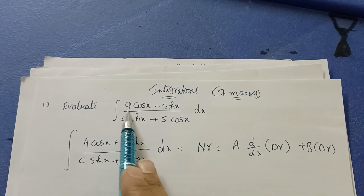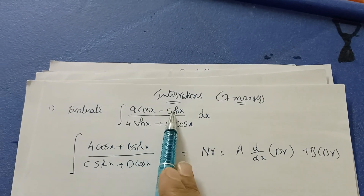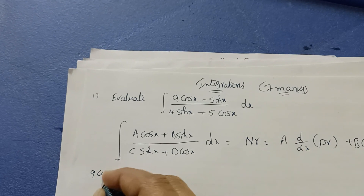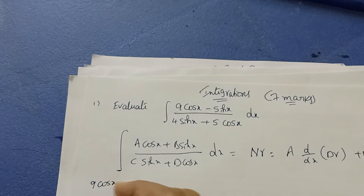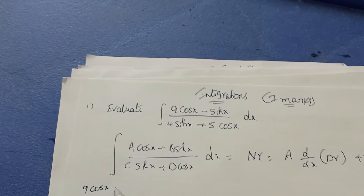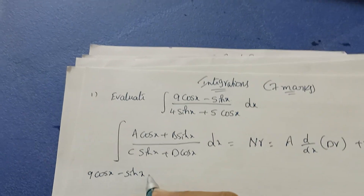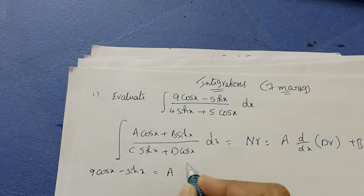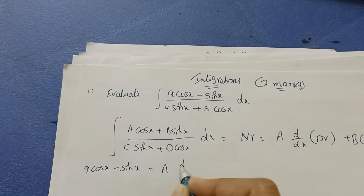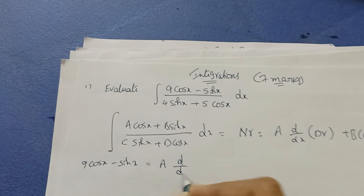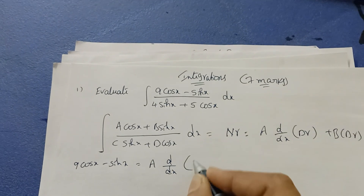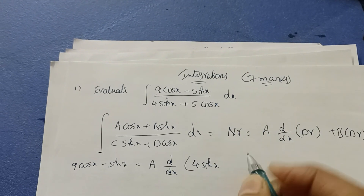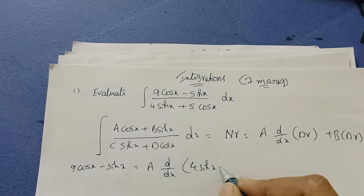Now, what is the numerator here? It is 9·cosx minus sinx. So write: 9·cosx minus sinx equals a times d/dx of the denominator, which is 4·sinx plus 5·cosx.